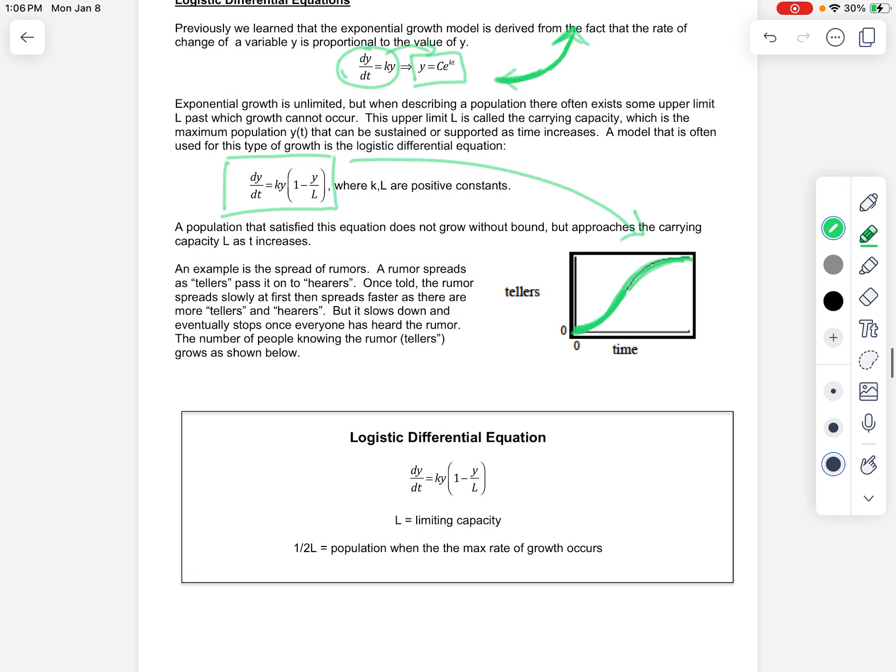So let's say we're talking about a rumor that spreads. In the beginning, if you look at this graph, no one knows the rumor, but then it spreads very quickly. But let's say we're talking about a rumor that spreads at Wheeling High School. Obviously, at some point, it has to level off. Let's say the population of Wheeling is about 1,800 students. So once everyone has heard the rumor, then that rumor stops growing.